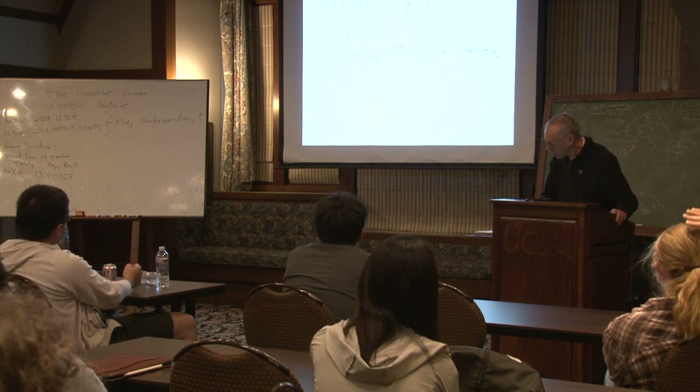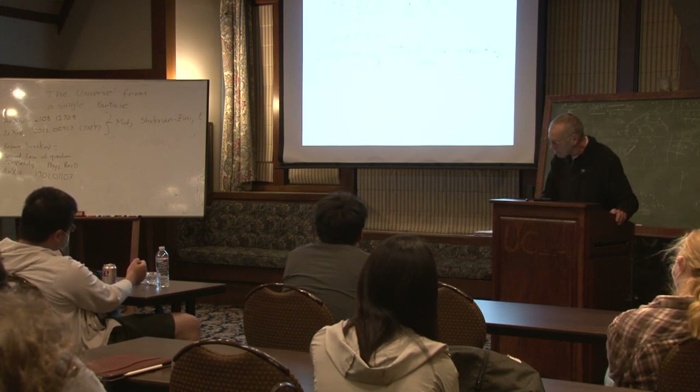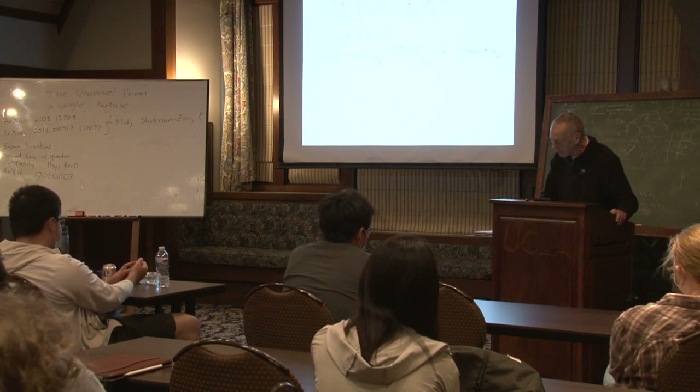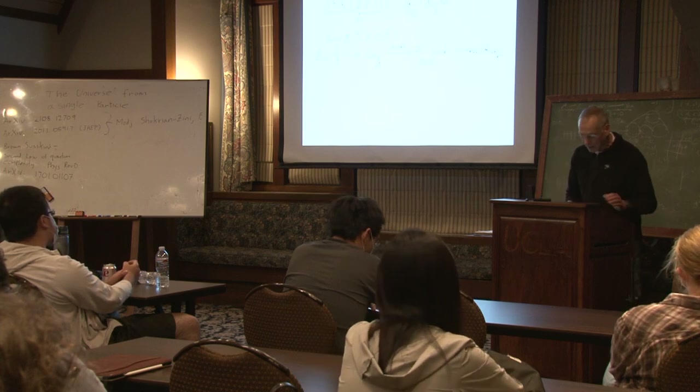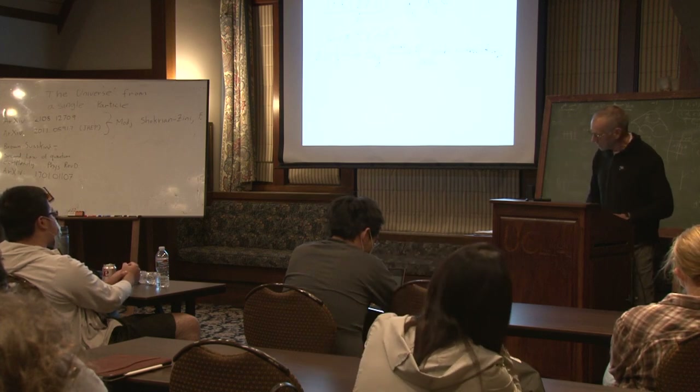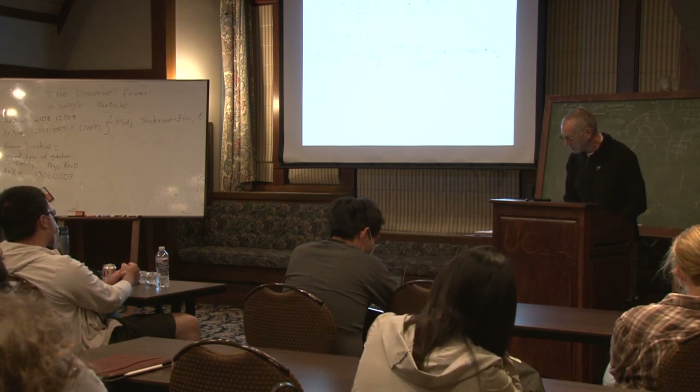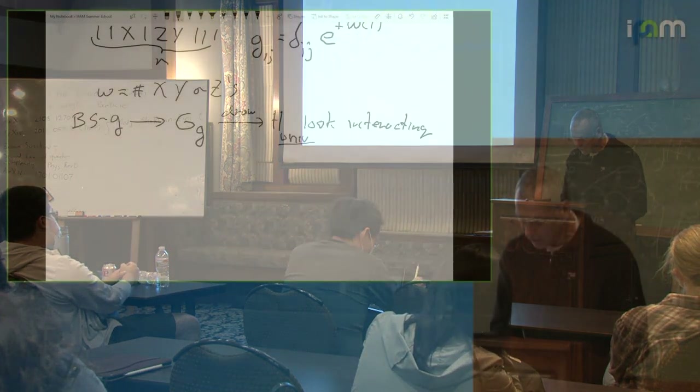I'll explain how symmetry can be broken and lead to something like the Brown-Susskind metric on Hermitian operators, and hence a probability distribution on Hamiltonians. So in order to do this, it's now time to start the math and give you a definition.